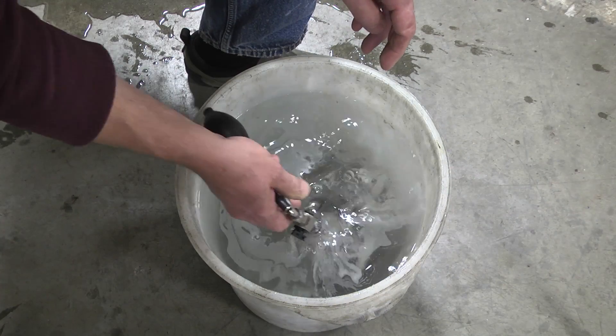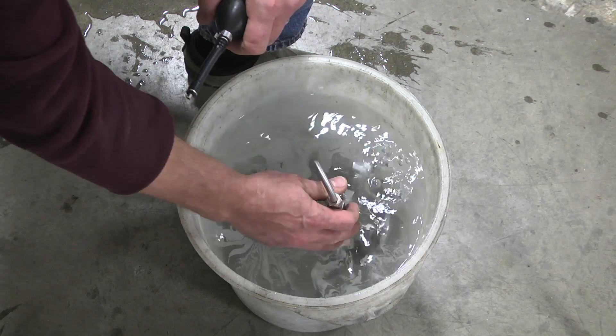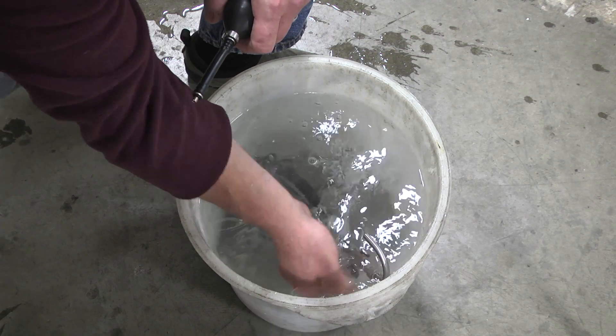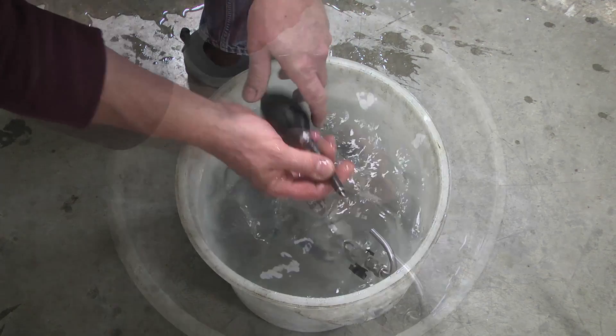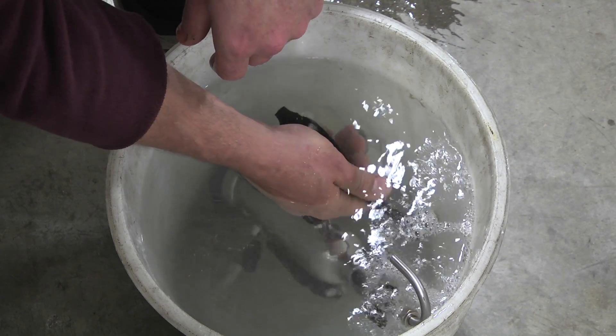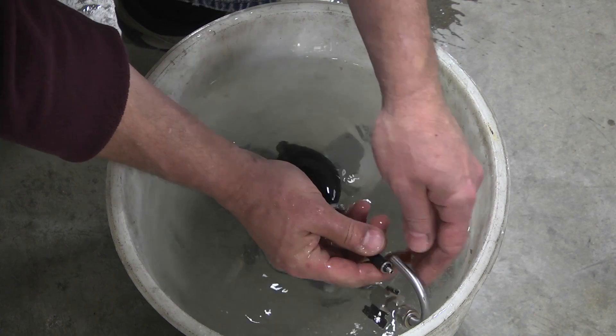Rinse the inside of the volume meter with water to remove any traces of beer. Do not use hot water as it will damage the thermometer. Make sure to rinse out any traces of beer from the aspirator bulb to prevent the check valve from sticking.